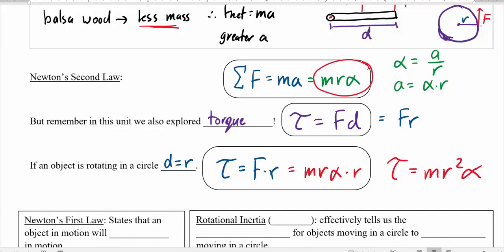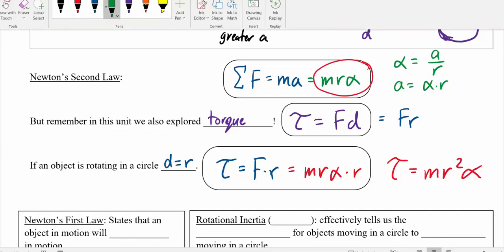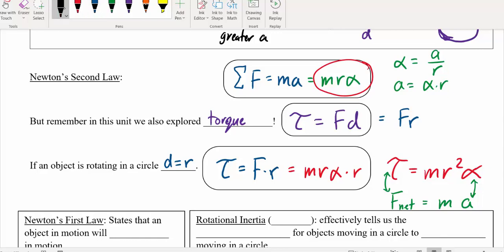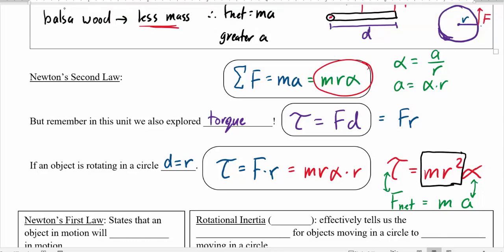I want to draw an analogy here to F net equals ma. When we talk about rotating objects, we don't talk about force — we talk about torque. There's an analogy between torque and force, just like there's an analogy between linear acceleration and rotational acceleration. The leftover term — this mr² — is analogous to mass. The more mass something has, the harder it is to accelerate. Similarly, for a rotating object, the more mr² it has, the harder it's going to be to accelerate.